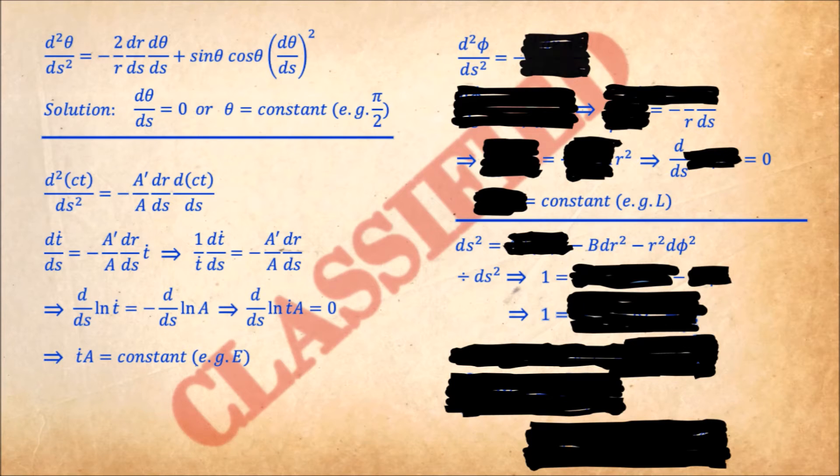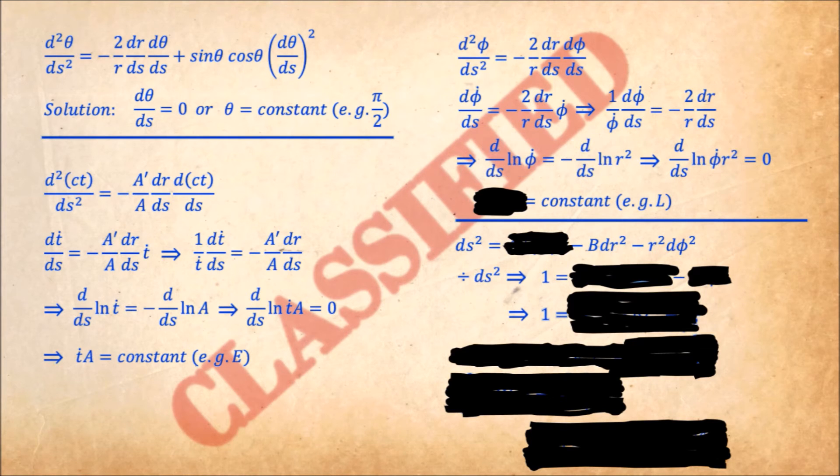Moving on to the equation for phi. It too can be written in a logarithmic form, leading to another constant of motion, phi dot r squared, which we'll call capital L.